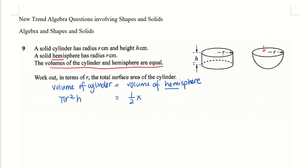And that equals the volume of the hemisphere. Since it's a hemisphere, I need half times the full sphere formula. The formula for volume of a sphere is 4 over 3, so the hemisphere volume is half times 4 over 3 pi r cubed.